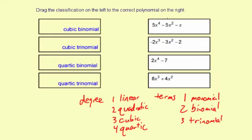So let's take a look at this first polynomial here: 5x to the fourth minus 5x squared minus x. x to the fourth, that's the highest degree. So that means you have a quartic polynomial. And you have one, two, three terms, which means a trinomial. You have a quartic trinomial.